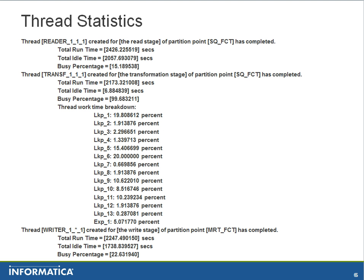This slide shows the thread statistics for a specific session run. We can see there is a single pipeline reader, a bunch of transformations, and a writer, along with the time taken by each thread — a breakdown of time taken by each thread. For example, the total runtime for the reader is 2,426 seconds and it was idle for 257 seconds. These statistics provide a wealth of information to identify which thread took how much time, and by calculating the time each thread and transformation took, we can narrow down which specific transformation took longer to complete.